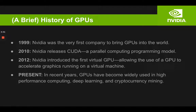A brief history of GPUs, focused on the innovations that Nvidia has come up with. Around 20 years ago, at the turn of the millennium, Nvidia was the very first company to bring GPUs into the world, at least they claim to be. About 10 years later, around 2010, Nvidia released CUDA, which is the software layer that allows you to manipulate their GPU hardware. CUDA is a parallel computing programming model.